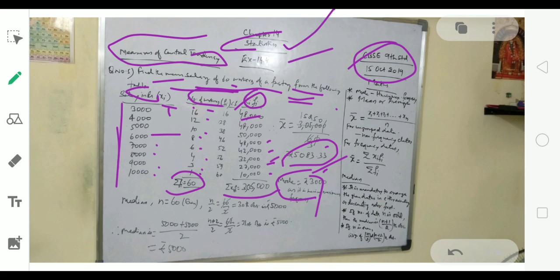So 3000 rupees will become the mode because it is repeated 16 times for 16 workers. For median, you will not be able to find it unless you use cumulative frequency.